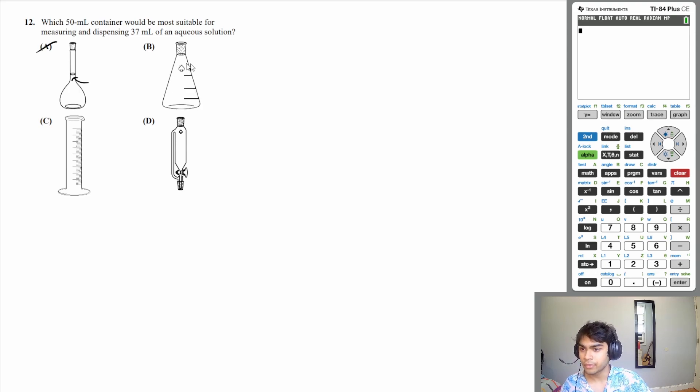Graduated cylinders are mainly used for making reactions go. So you could have a reaction happening in this graduated cylinder. That's why it's kind of graduated. So you could kind of swirl it around and the liquid wouldn't, you know, leave the container. So B would not be suitable for measuring and dispensing 37 ml because it is inaccurate.